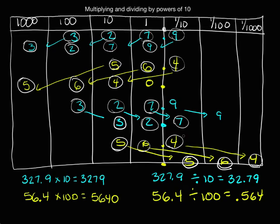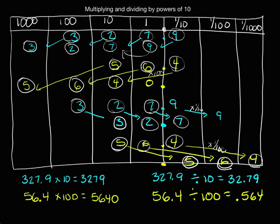When we move one position to the left on the place value chart, our units get 10 times larger — we saw that up here. When we move two places to the left, we multiplied by a hundred, so our units become a hundred times larger. When we divide, our digits move to the right on the place value chart. When a digit moves one position to the right, it's becoming one tenth the size of the value before it. When we move two places to the right, it's like multiplying by one one-hundredth — it's one one-hundredth the size of its original value.